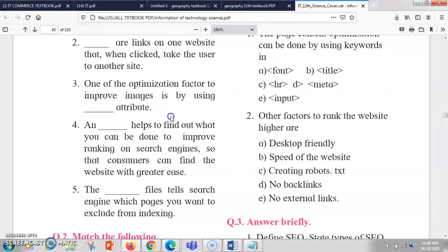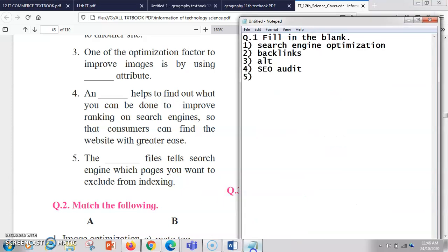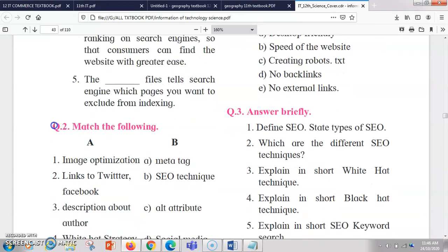Next, the blank files tell search engines which pages you want to exclude from indexing. So basically robots.txt tells the search engine what things you want to exclude from indexing. So you basically have an index and things have been excluded with the help of robots.txt.